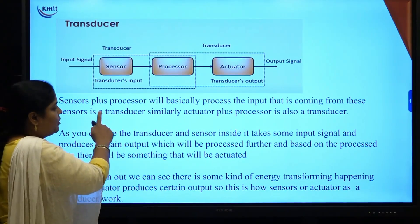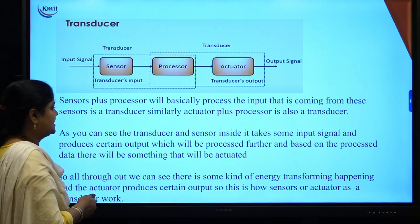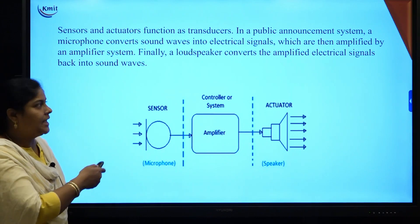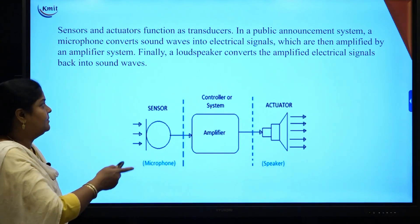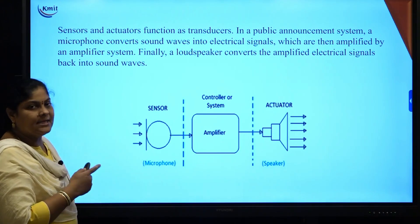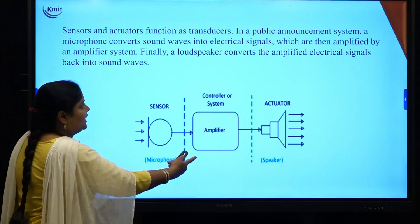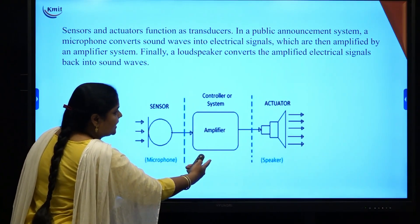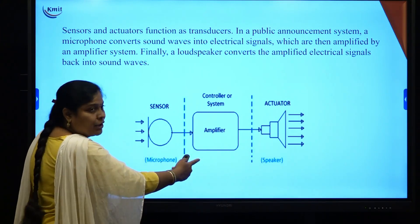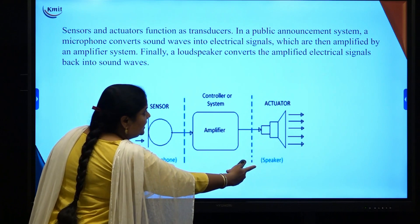Throughout this process, we can observe some form of energy transformation happening from input signal to output signal. So sensors and actuators function as transducers. For example, in a public announcement system, a microphone converts sound waves into electrical signals. These electrical signals are amplified by an amplifier. Finally, a loudspeaker converts this amplified electrical signal back to a sound wave. Here, the microphone is a sensor and the loudspeaker is the actuator.